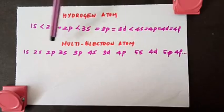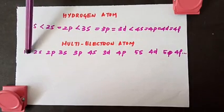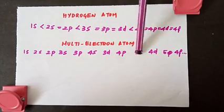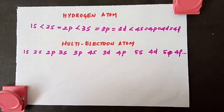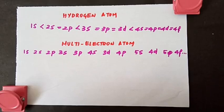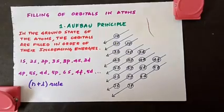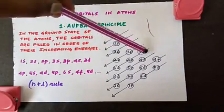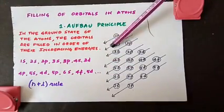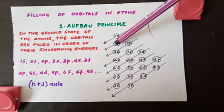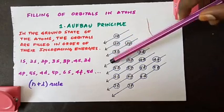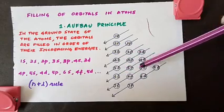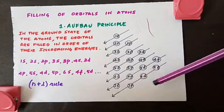We have a pattern to remember the energy order easily — write the orbitals in rows (1s; 2s; 2p; 3s; 3p; 3d; etc.) and follow diagonal arrows. The order for multi-electron atoms is: 1s, 2s, 2p, 3s, 3p, 4s, 3d, 4p, 5s, 4d, 5p, 6s, 4f, 5d, 6p, 7s, 5f, 6d, 7p. This is the order of filling orbitals.